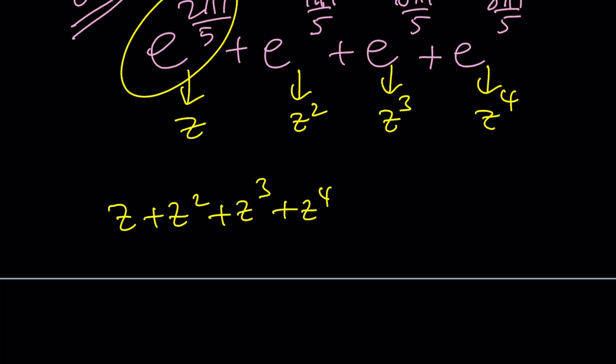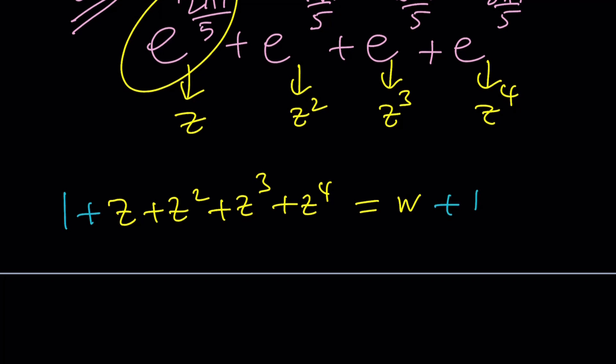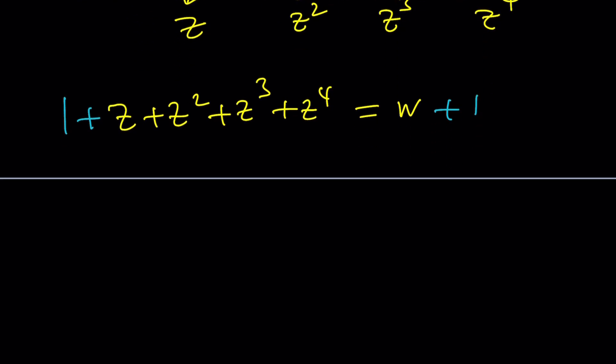Now, if you go ahead and call this W, you can add one to both sides. And then, when you do that, you're going to get something that is sort of factorable. Or, I should probably say this, multiply. This is the sum of these powers. And you can also use the geometric series formula. Z to the fifth minus one divided by Z minus one. And that's going to equal W plus one. Make sense?